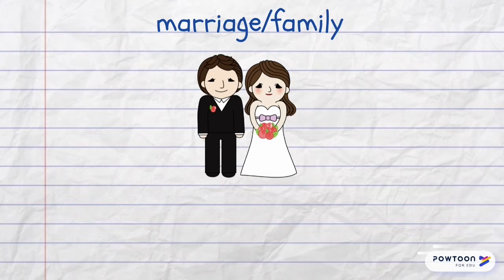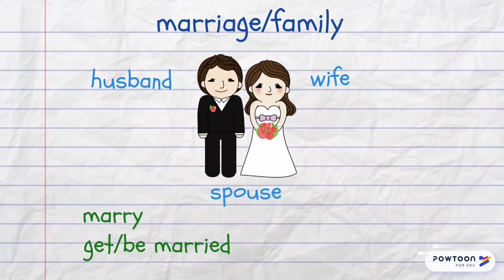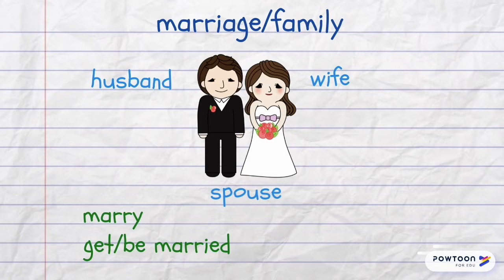When your romantic relationship gets very serious, you get married. You become a husband or a wife. There is one word which means both, and that is the word 'spouse'. If you want to know how to use the words 'marry', 'get married', and 'be married' correctly, please click on the link above and check out my other video where I explain that in detail.